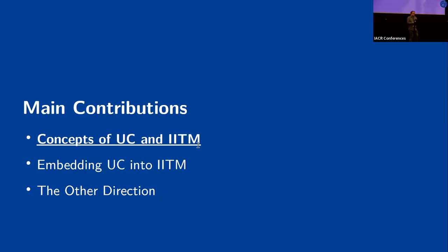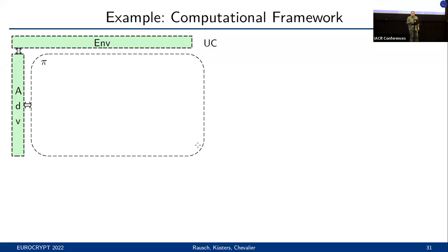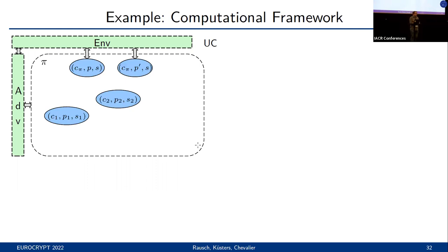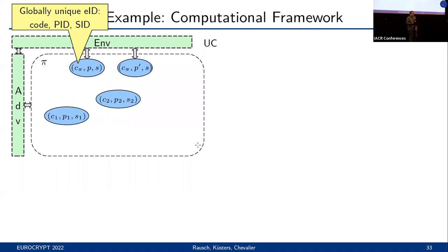In the rest of my talk, I will give an overview of our main results, starting with some examples of the concepts used in the UC and IITM models to illustrate why a comparison of both is non-trivial. Let me start by briefly recapping the computational frameworks. The UC model considers an environment and an adversary running with some protocol pi. The protocol pi consists of several instances where only highest-level instances can actually interact with the environment. Each of these instances is identified uniquely via a global extended ID, which consists of the code of the instance, a party or process identifier, and a session identifier.